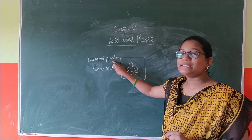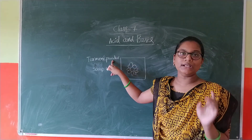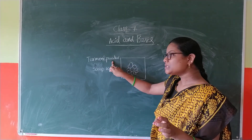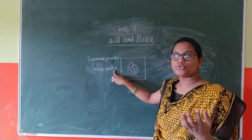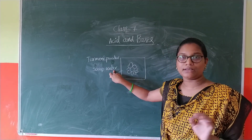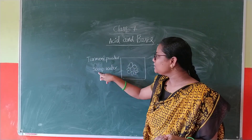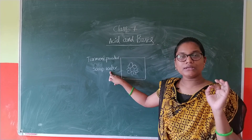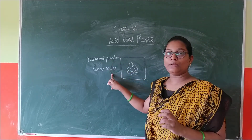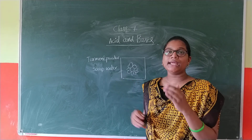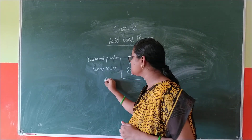Turmeric powder is a natural indicator. When the natural indicator turmeric mixes with soap water, and soap water is of basic nature, the natural indicator mingles with the basic substance and gives a colour change — that colour is red.